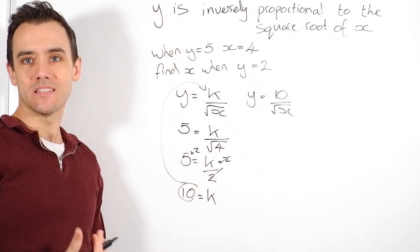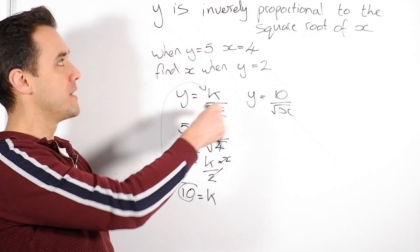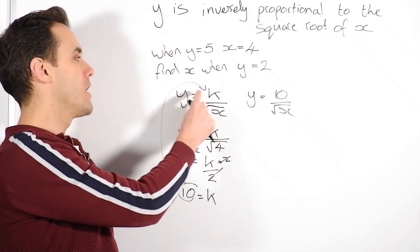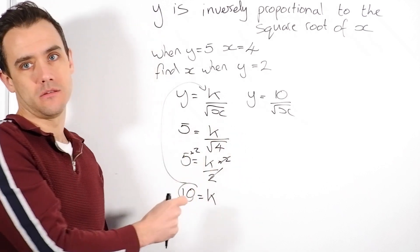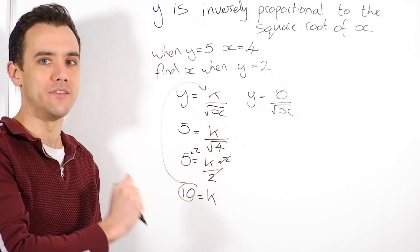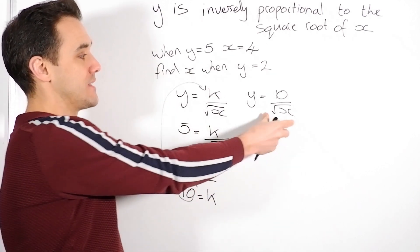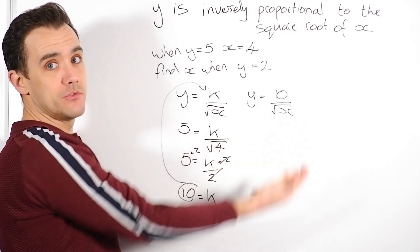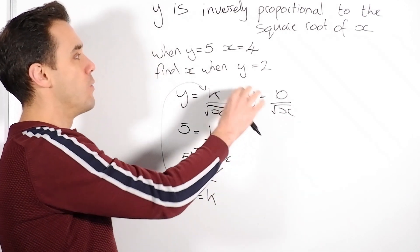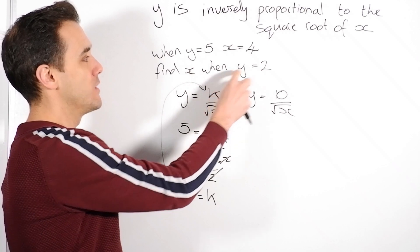So we were doing exactly the same as last time. We use our values, pop them in. The only difference, y equals k divided by the thing for inversely proportional. So now I've got my equation. Could be you stop in there. Could be it just says find an equation. We now though need to find x when y is 2.